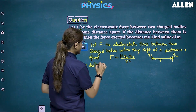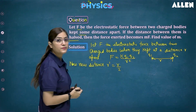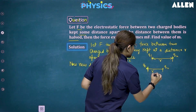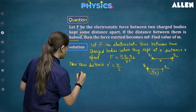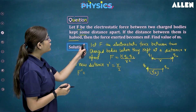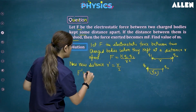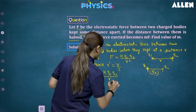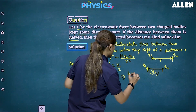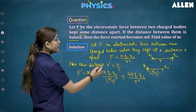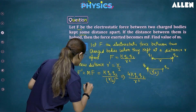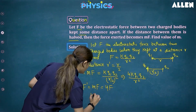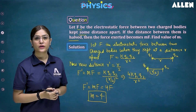The new distance R dash becomes R divided by 2. Substituting into the formula: F dash equals K Q1 Q2 upon (R/2) squared, which gives 4 times K Q1 Q2 upon R squared. Since K Q1 Q2 upon R squared equals F, we get F dash equals 4F. Therefore M is equal to 4.